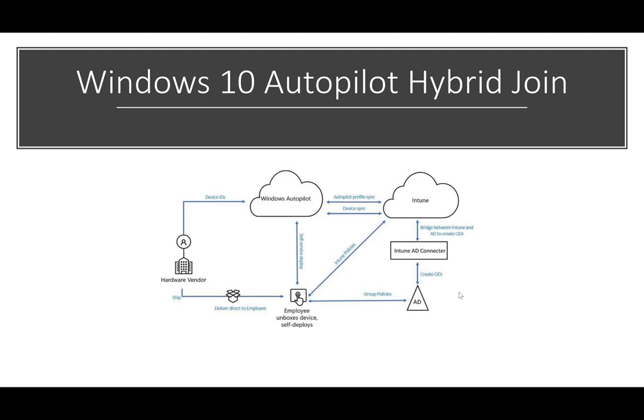Here's a basic diagram of what this looks like from an architecture standpoint. Basically we have the ability to join devices both to Azure AD and push them down into our local environment as well. So while you're transitioning to the cloud, you could still use the local environment for group policy objects, but also slowly start to move into Intune for device management.